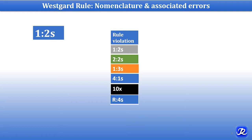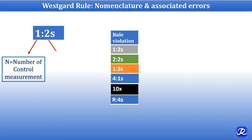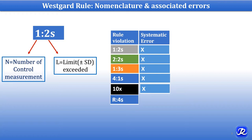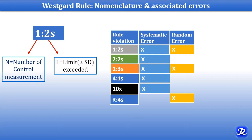Let's understand the nomenclature. For example, in 1-2S, the number 1 represents N, that is the number of control measurements, and 2S represents the limit exceeded, which can be ±1, 2, or 3 standard deviations. The rules 2-2S, 1-3S, 4-1S, and 10X — rule violations of 2-2S, 1-3S, 4-1S, and 10X — denote systematic error.